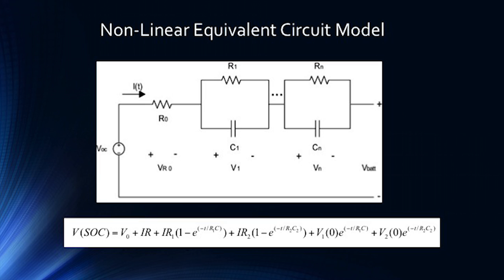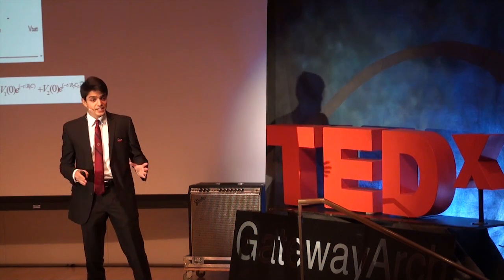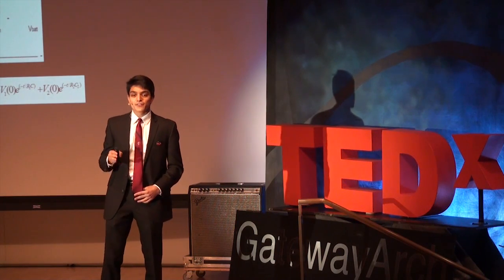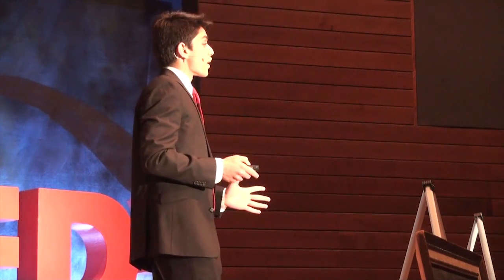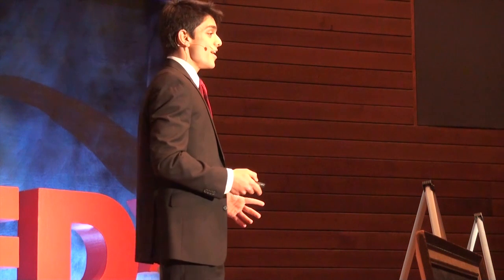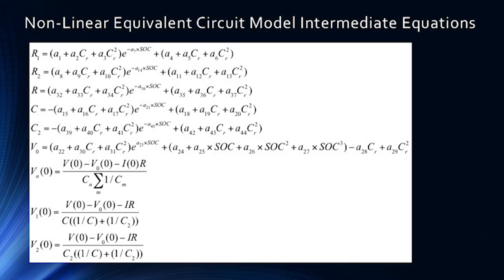The model we ended up creating is called the nonlinear equivalent circuit model. Pictured above is a pretty typical electrical circuit, consisting of a current, a couple of resistors, a couple of capacitors, and a few voltages. This was the basis for our model, and each of these values played a role in calculating the voltage that we would ultimately plot using the voltage equation below. We had to use mathematical representations of these real-life components. Now, this might look a little daunting, but the main point to notice is that each of these equations is a function of a certain a value. As I showed earlier, those a values are actually just strings of binary code.